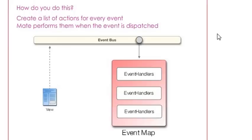We actually want to use this whole idea of events naturally to create something called an event map that MATE will use to loosely couple your system and dispatch events to other components. How do we do this? We can create a list of actions for every event, and MATE performs them when the event is dispatched. From our view, we actually click, and we have an event that bubbles up to an event bus. From that event bus, we actually have an event map. You're going to be creating a lot of event maps as you work with MATE.